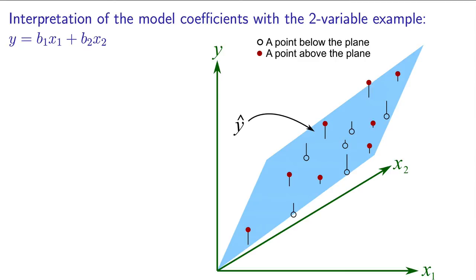The interpretation of our model coefficient, b1, is the slope as seen from the perspective of the x1 axis, and the b2 coefficient is the slope seen from the perspective of the x2 axis.